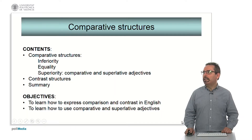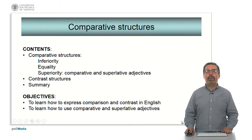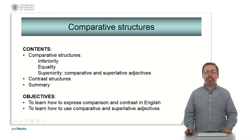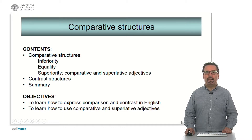These are the contents of the object. We will deal with some comparative structures of inferiority, equality and superiority, including comparative and superlative adjectives. We will then move on to some typical contrast structures in English and finish with a summary of the expressions. The objective is to learn how to express comparison and contrast in English with the most typical expressions and to learn how to use comparative and superlative adjectives.